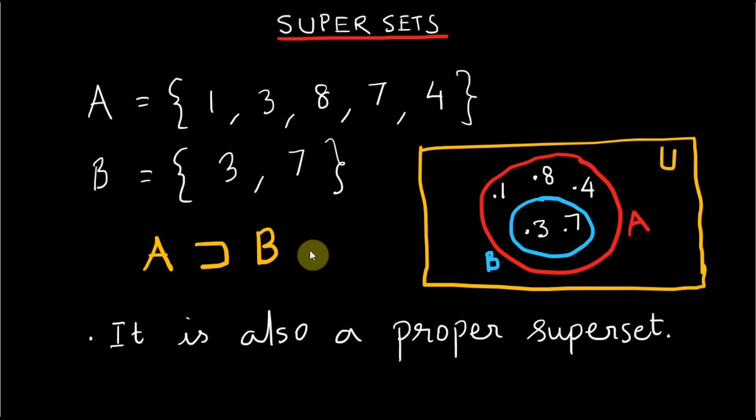If we draw a Venn diagram for set A and set B, it looks similar to the Venn diagram of subsets where B is subset of A.